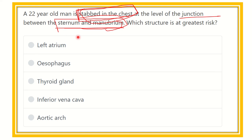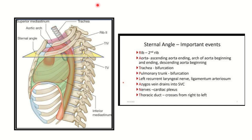At the junction of the manubrium and body of the sternum — the angle of Louis — several important structures are present. First, the second rib attaches here. The ascending thoracic aorta ends here, the arch of the aorta begins and ends here, and the descending thoracic aorta begins its journey here. The trachea bifurcation also occurs at this level.